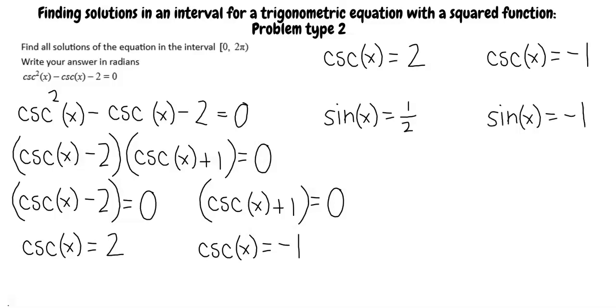Can you explain those steps? Of course! Looking at cosecant of x equals 2, we take the reciprocal of each side, and we have 1 over cosecant of x equals 1 half. So, we know that sine of x equals 1 half.